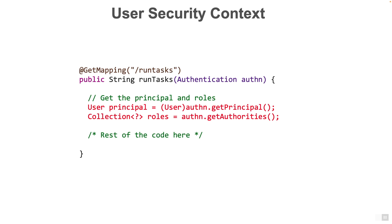Here we assume that we are running the code with the default implementation of Spring Security by adding the Spring Security jar to our pom.xml. In practice, the principal object which we are casting to user needs to be cast to the correct class depending on the type of authentication, whether we are using OAuth, JWT, SAML and so on. With this technique, the principal and the roles can be accessed for authorization within our runTasks method.